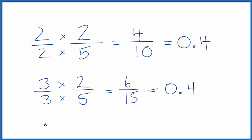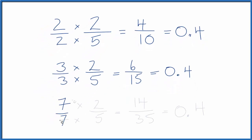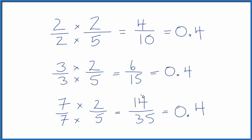Let's do one more — how about seven over seven? Since seven divided by seven is one, we haven't changed the value. It's still 0.4, but now we have the equivalent fraction fourteen over thirty-five. That's equivalent to two-fifths and all the other fractions we found.